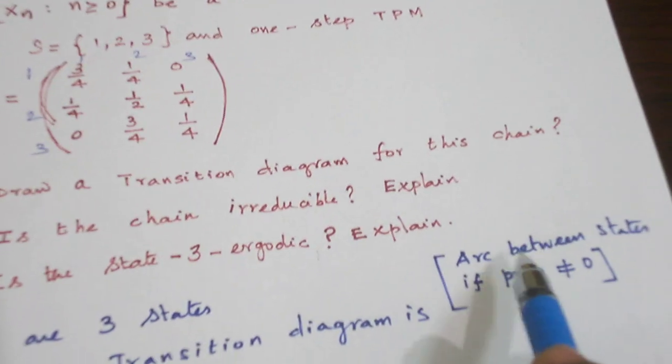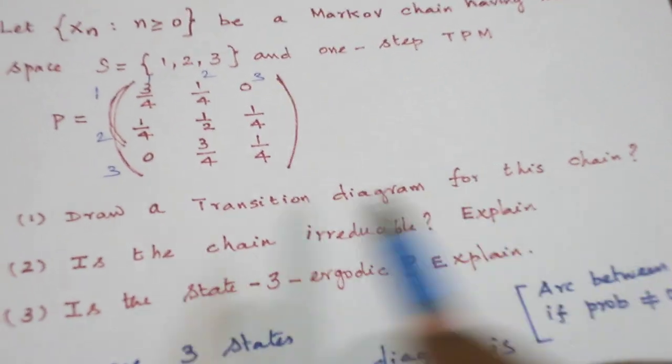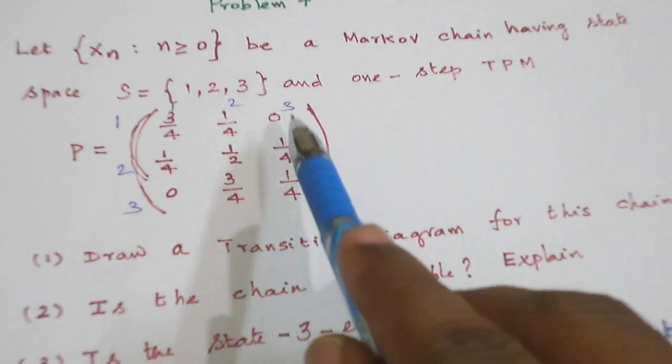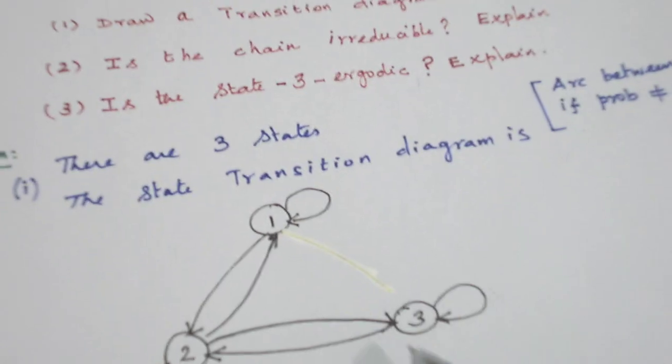Between nodes we draw an arc if the probability is not equal to 0. So probability 0 only for between 1 and 3 and 3 and 1, so there should not be an arc between 1 and 3 and 3 and 1.